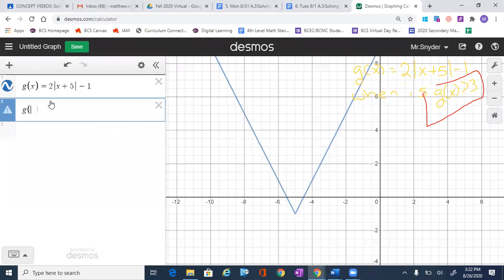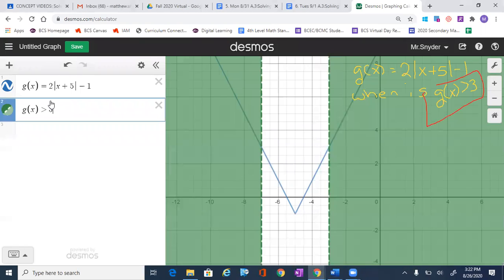Once we have that information, we see a couple of things. This is one way of doing it. Notice that the shading is over here on the right hand side.